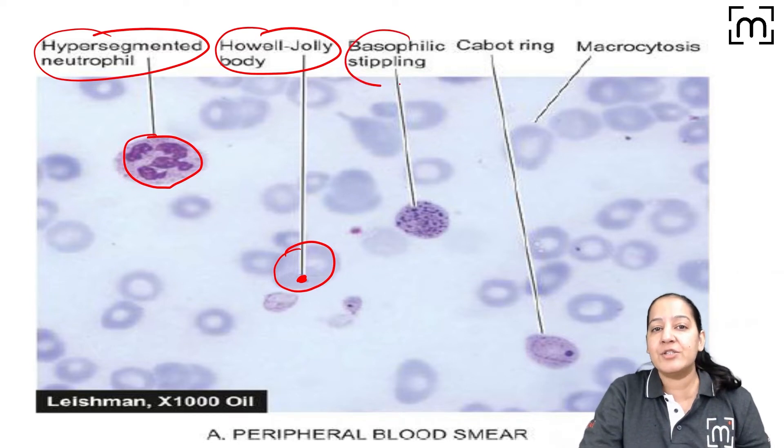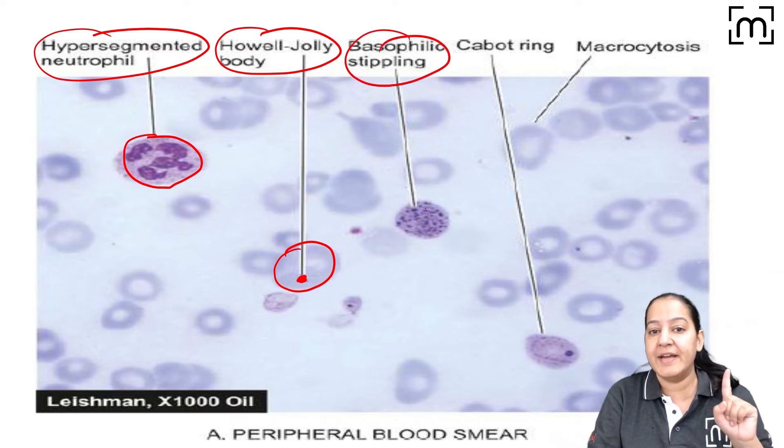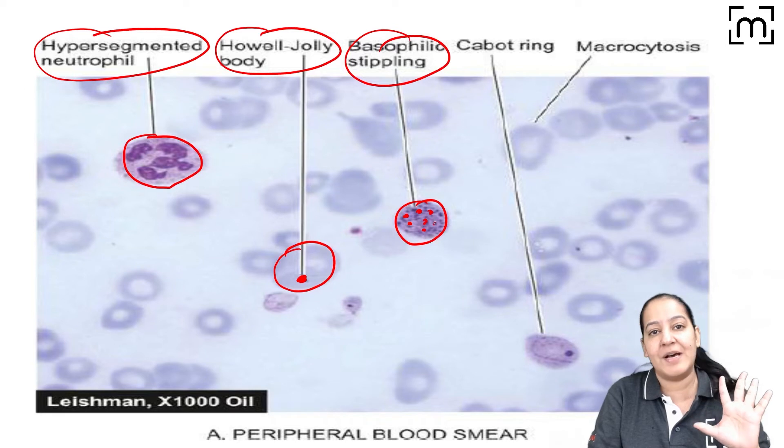The third is the basophilic stippling. It is the punctate basophilia in the cytoplasm of the RBC.